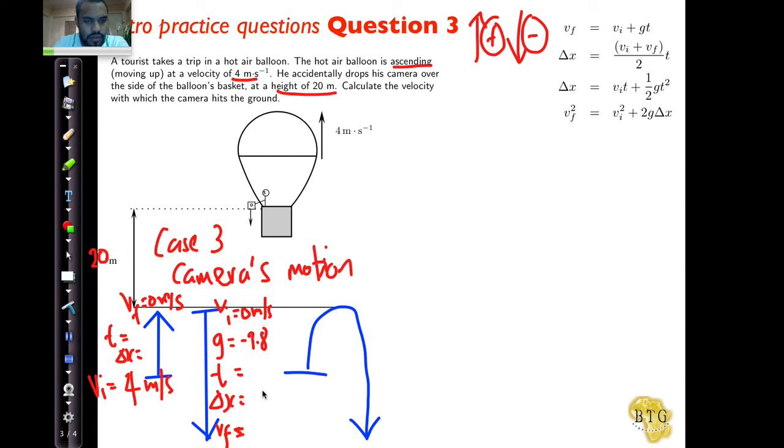V initial is going to be four meters per second, and we're going to get the final, which we are not sure what it hits the ground with, but it's some value and it's going to be a negative value. Little g acts upon the motion, minus nine point eight meters per second squared. The time here will be for the entire motion.